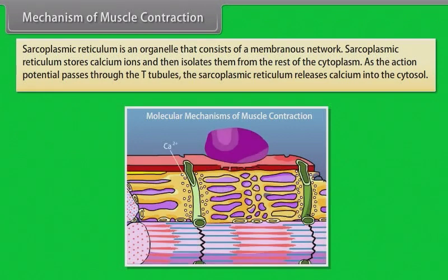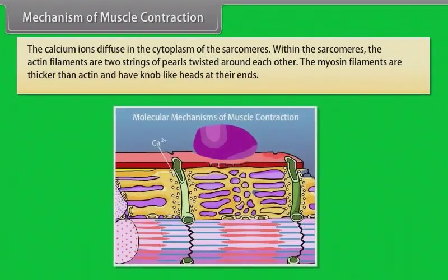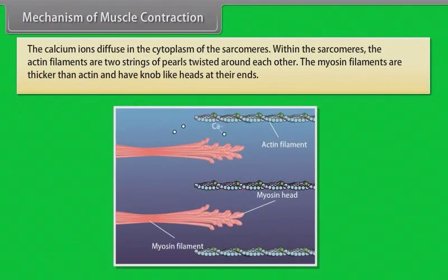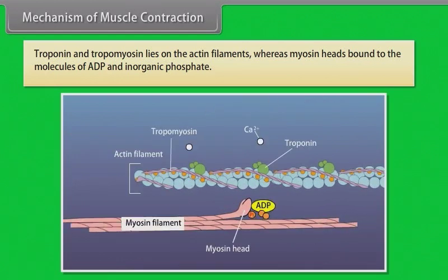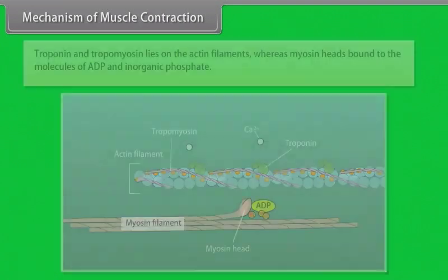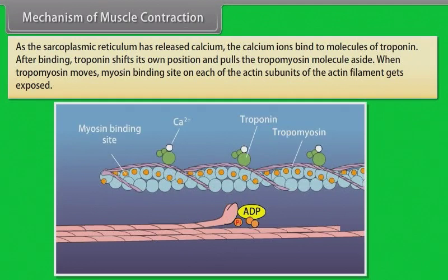The sarcoplasmic reticulum is an organelle that consists of a membranous network. It stores calcium ions and isolates them from the rest of the cytoplasm. As the action potential passes through the T-tubules, the sarcoplasmic reticulum releases calcium into the cytosol. The calcium ions diffuse into the cytoplasm of the sarcomeres. Within the sarcomeres, the actin filaments are two strings of pearls twisted around each other, while myosin filaments are thicker and have knob-like heads at their ends. Troponin and tropomyosin lie on the actin filaments, whereas myosin heads are bound to molecules of ADP and inorganic phosphate.